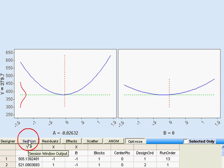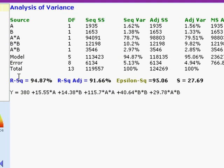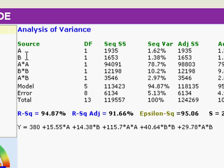Also note that in the session window you'll have some new terms. Here we've got term A and term B. We're going to get an A squared term and a B squared term in addition to our AB interaction term.